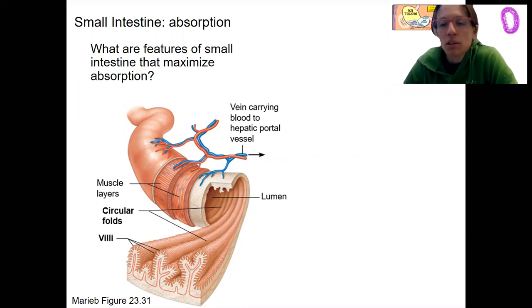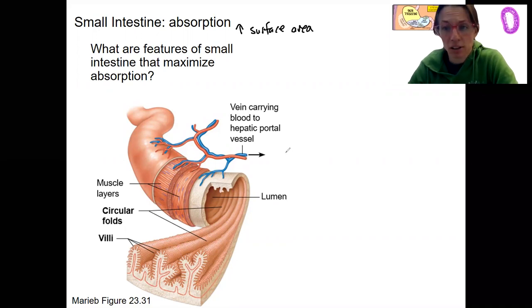I mean, literally it has lacteals, right? Absorption is going to be facilitated by having a high surface area. What are the ways in which the intestine is specialized with this high surface area?